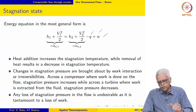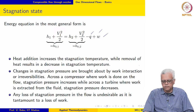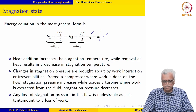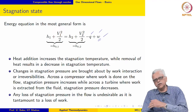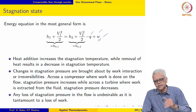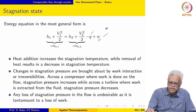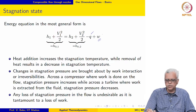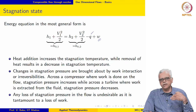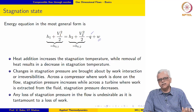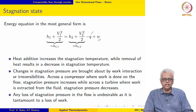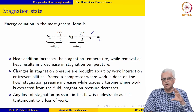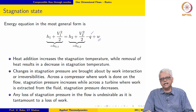We can also bring about a change in stagnation state by adding or removing work. We can change the stagnation state in the absence of work interaction by heat interaction — adding heat increases the stagnation temperature, removing heat decreases the stagnation temperature. In the absence of heat (adiabatic flow), we can change the stagnation state by adding or extracting work from the flow.